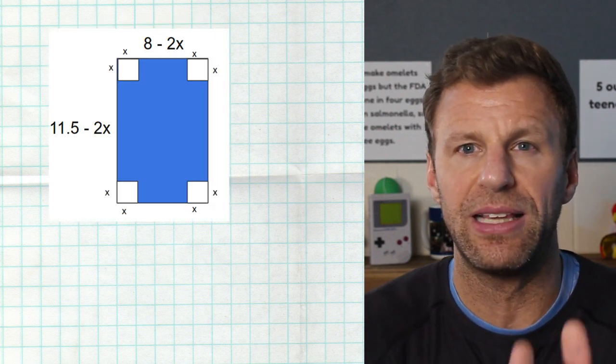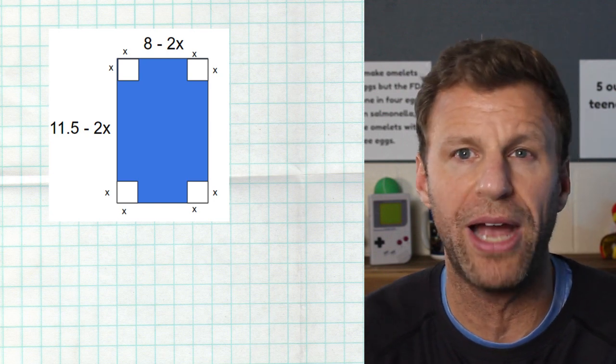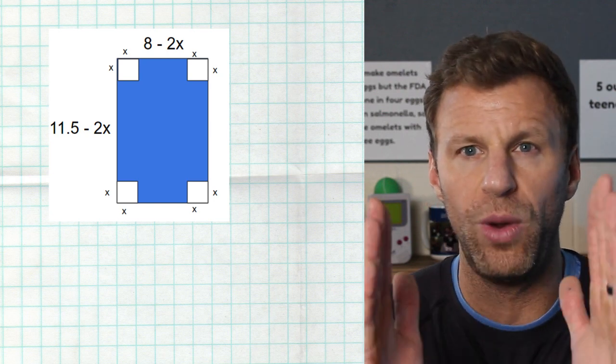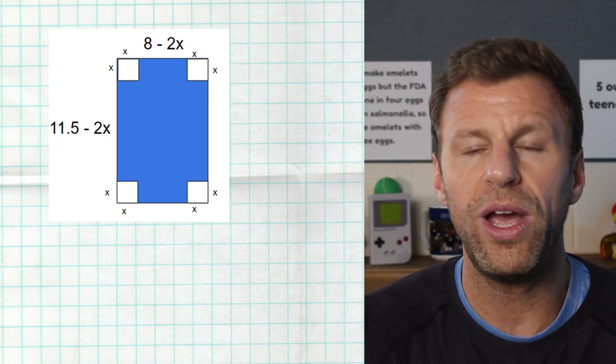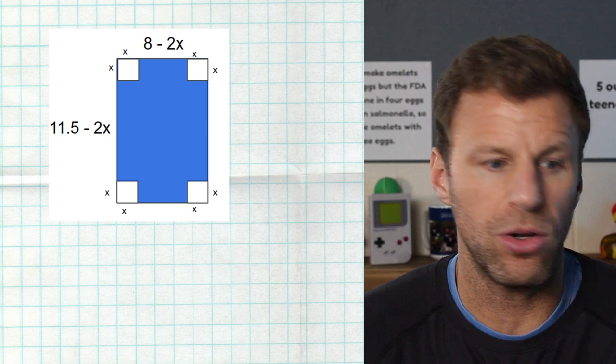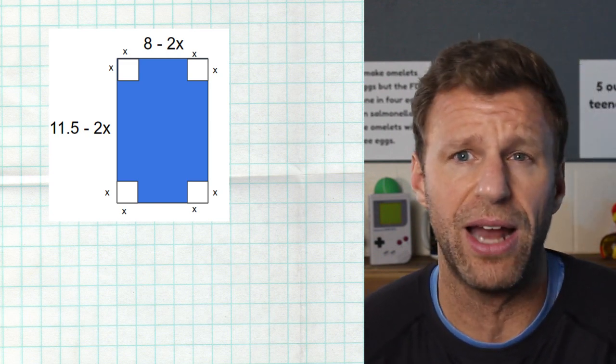Now that means that the length of our box and the width of our box are both shortened by two x's. Because the width was eight, but now I've cut out x from each side, so it's eight minus two x. The width was 11 and a half, and now I cut out x from each corner, so now it's 11 and a half minus two x.